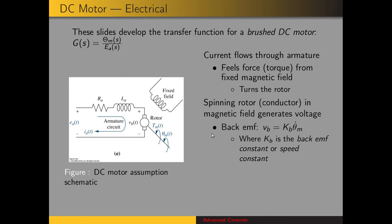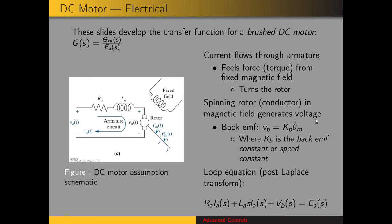The back EMF magnitude is proportional to the speed of the rotor, and that constant of proportionality is called KB, also known as the back EMF constant, speed constant, or voltage constant. We can write the loop equation for the armature and take the Laplace transform: the armature resistance times the current, plus the inductance times the time derivative of the current, plus the back EMF equals the applied voltage at the armature.